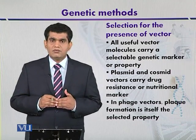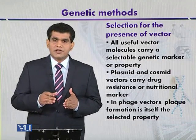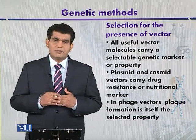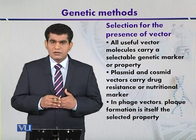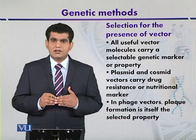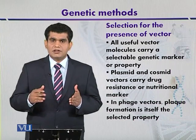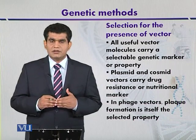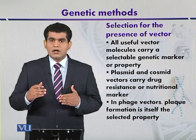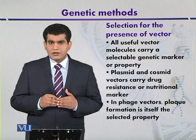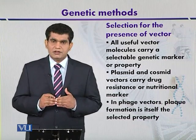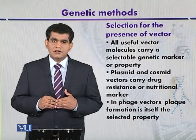On the other hand, if we look at other cloning vectors like bacteriophage lambda, different types of lambda vectors can be used — replacement vectors and insertional vectors — and their selection may be based on different strategies. For example, in a replacement vector where around 23 kilobase DNA fragments can be cloned, the size of the packaged DNA will act as a selectable marker.